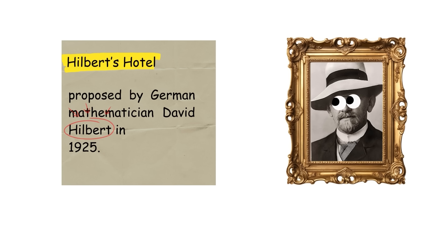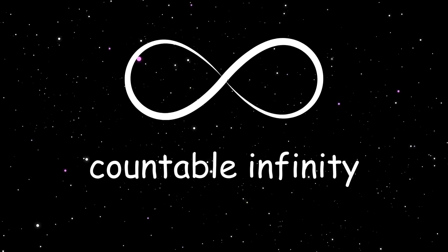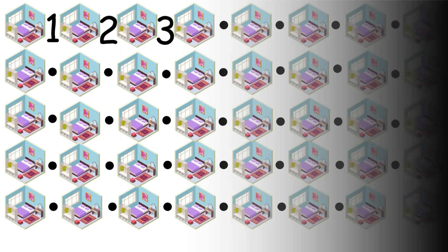Hilbert's Hotel is a thought experiment proposed by German mathematician David Hilbert in 1925. It involves a hotel with an infinite sequence of rooms, one, two, three, and so on to infinity. This is called countable infinity, since each room can be associated with a counting number.